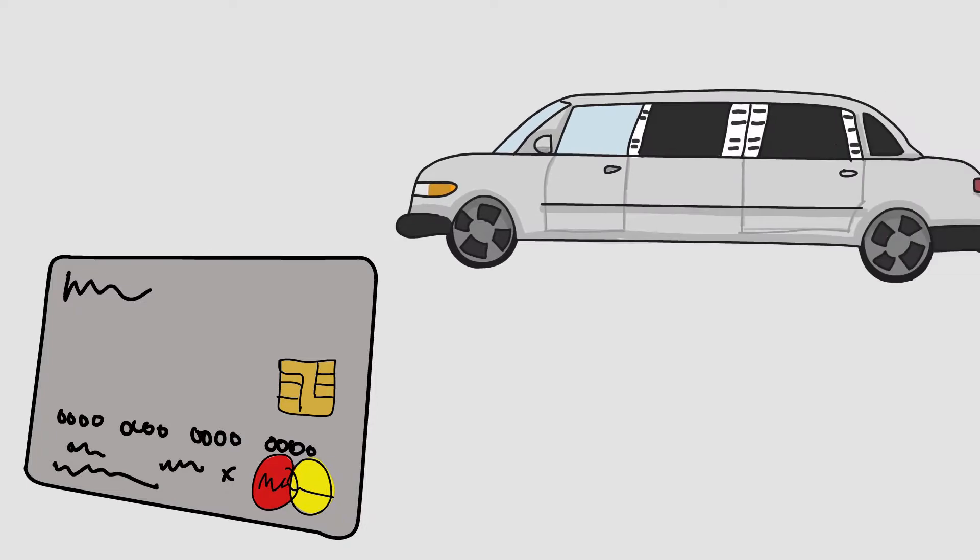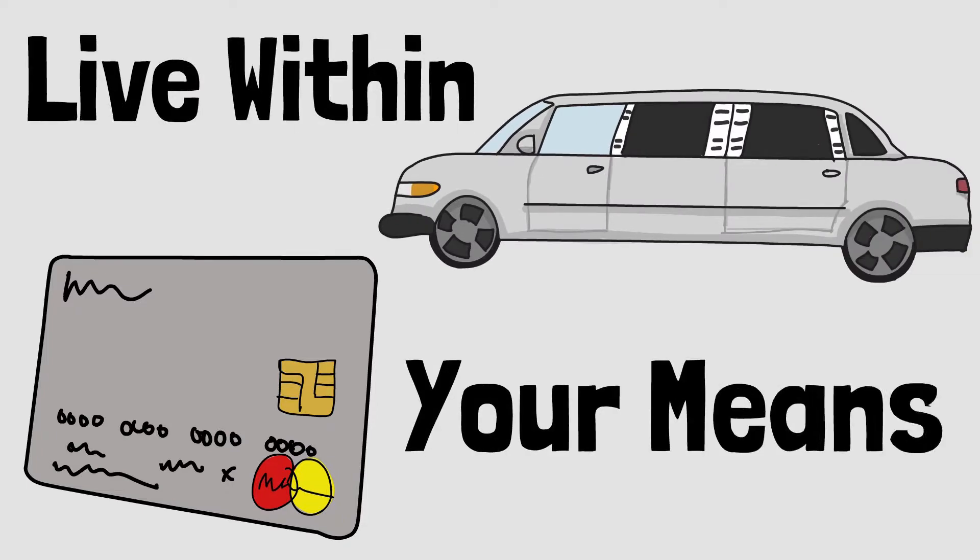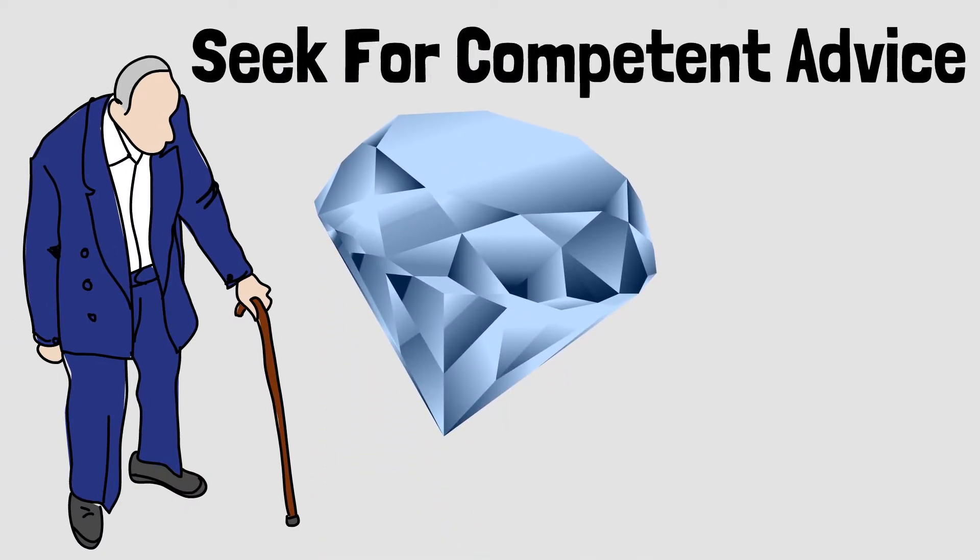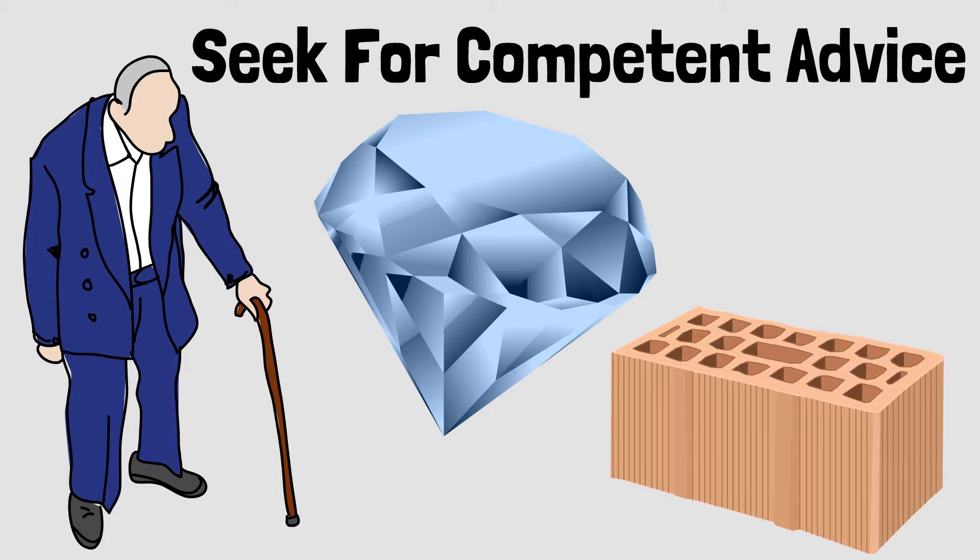The second law is to live within your means. Don't spend what you don't have. The third law is to seek advice from those who are competent to give it. If you want advice about jewels, go to a jewel merchant, not a brick maker. When you set a task for yourself, complete it.